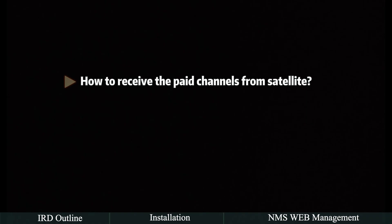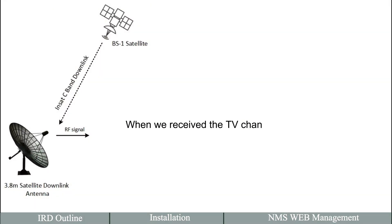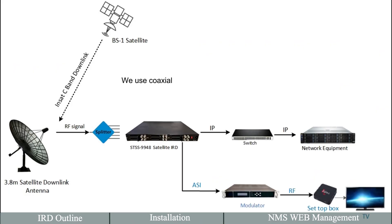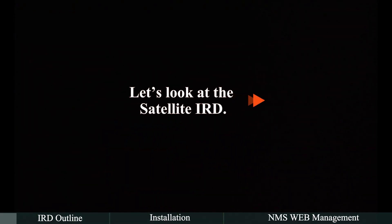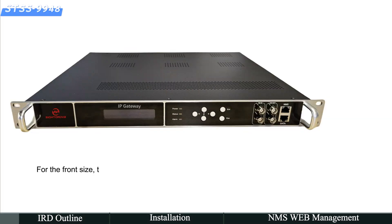How to receive paid channels from satellite. When receiving TV channels from a satellite dish, we use a coaxial cable connected with a splitter, then connect to a professional satellite receiver IRD. Let's look at the satellite IRD from the front side.